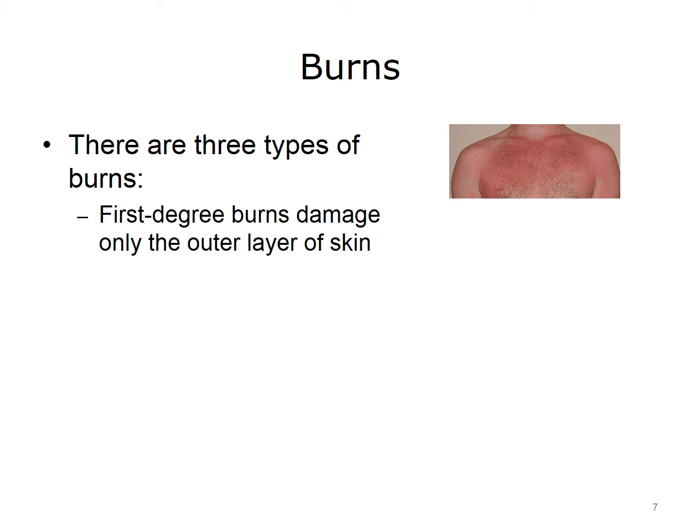First degree burns damage only the outer layer of skin and are the most shallow or superficial. First degree burns result in red, swollen, and painful skin. The burned area whitens when touched but does not develop blisters.